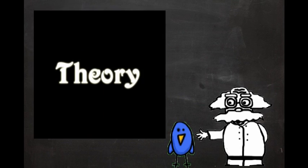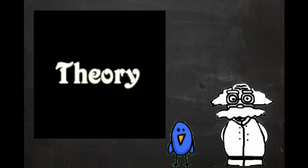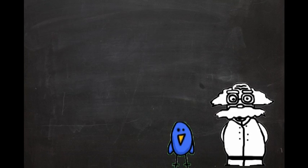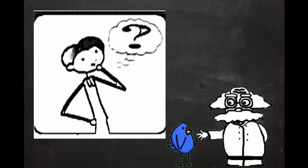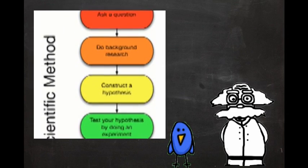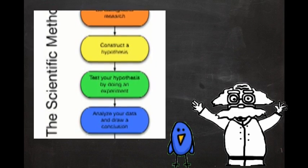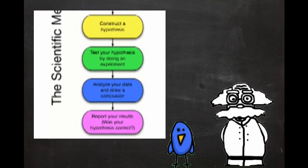There are generally two definitions for the word theory. The one most people run into in their everyday lives is a form of speculation, or a hasty guess at the reasons for a situation. The second definition is one that scientists use to express a collection of provable facts that explain a particular phenomenon.